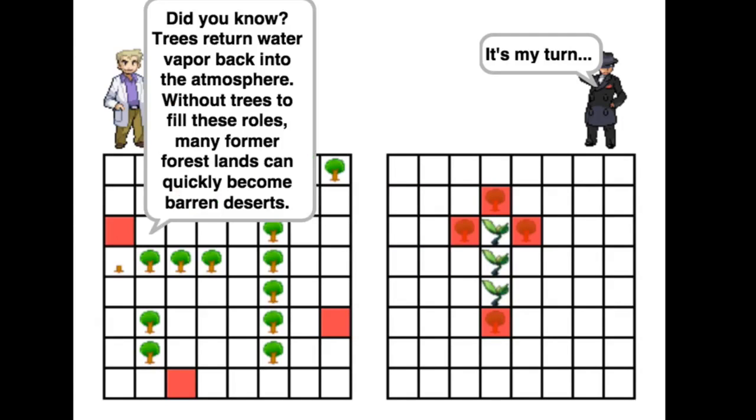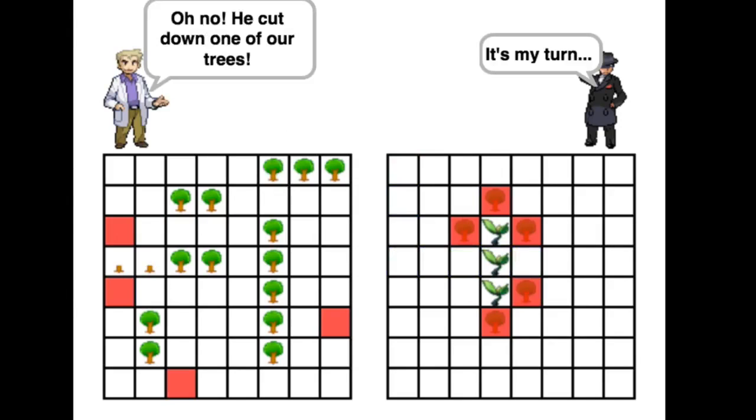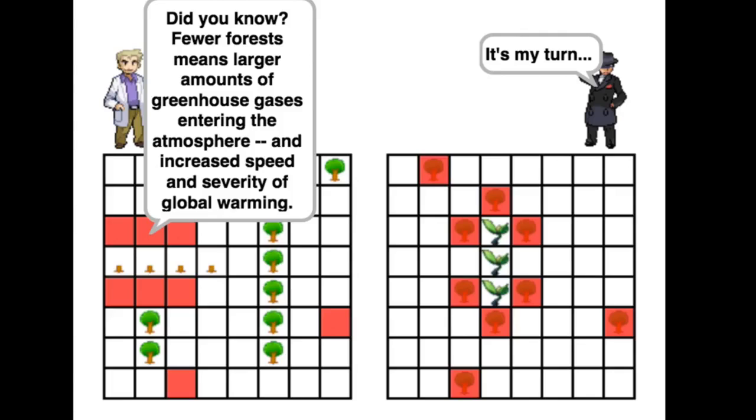After the CPU has cut down a certain amount of trees, Professor Oak will present a fact about deforestation to raise awareness. Here the player and the CPU take turns trying to attack the other ships.